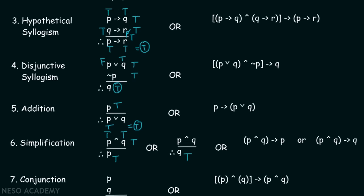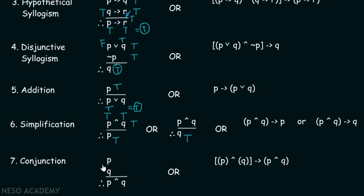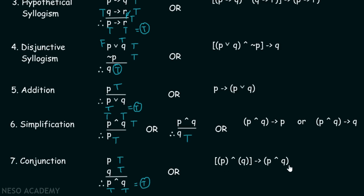The seventh rule is the conjunction rule: p, q, therefore p and q. If p is true and q is true, then p and q becomes true — this is according to the conjunction law. Hence it is a valid argument, and we can write this argument as: p and q implies p and q.